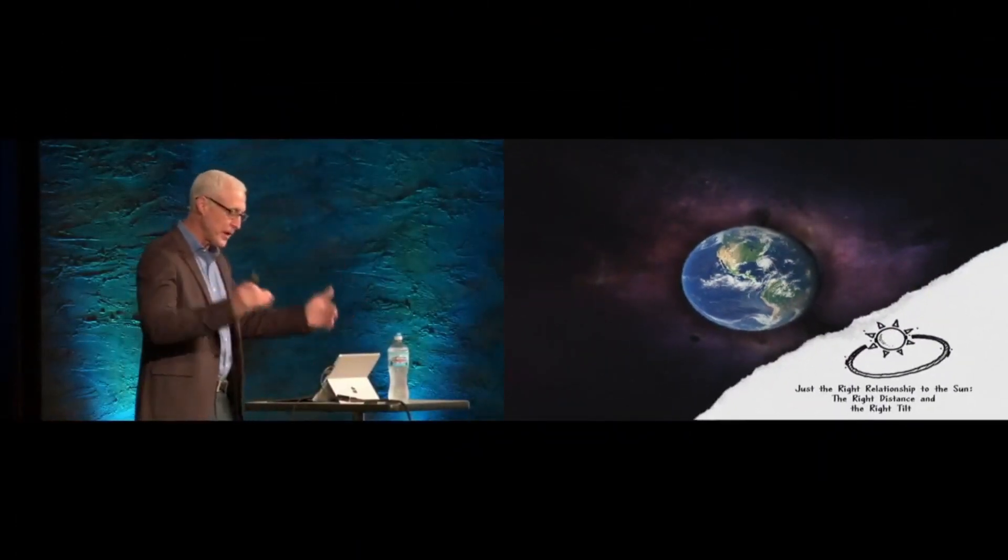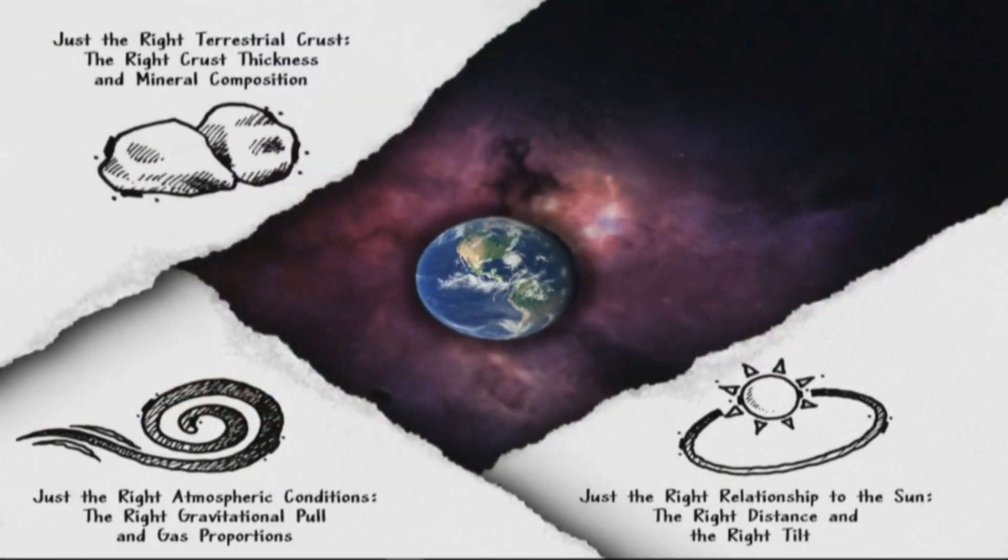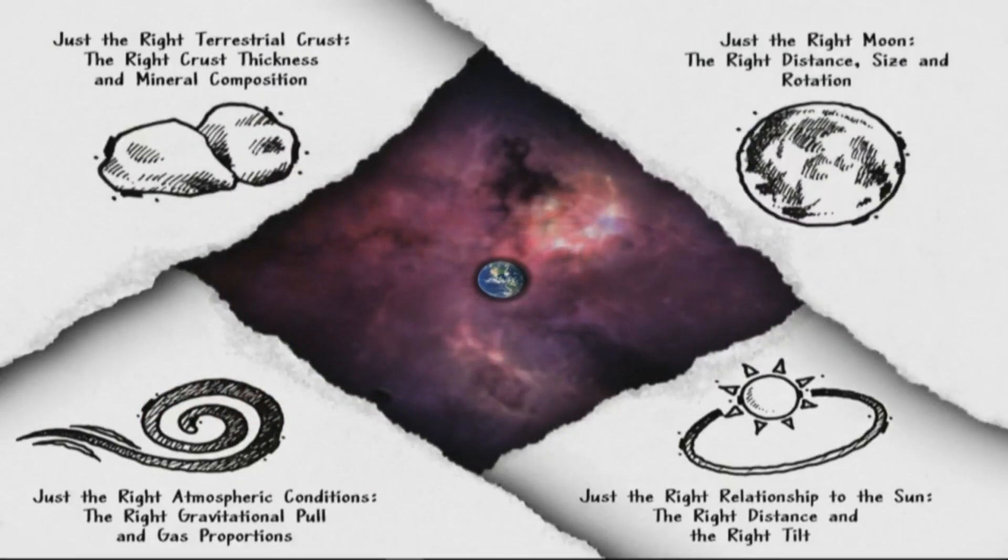Just the right conditions of our location related to the sun, the right tilt, the right atmospheric conditions, even the right terrestrial crust layer, not too thick, not too thin, and the presence of a moon, which does great things for us. It slows down our rotation, it gives us seasons, it actually controls tides. These are things that have to be in place for life to emerge on a planet. And that means that the number of planets that would actually fit this qualification is incredibly small. One.